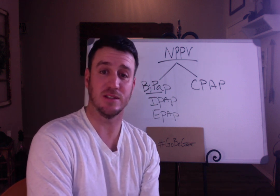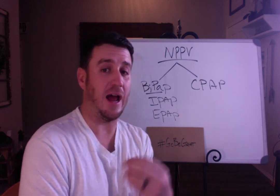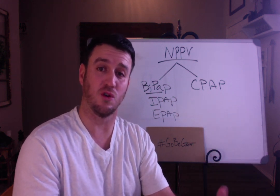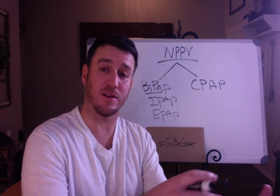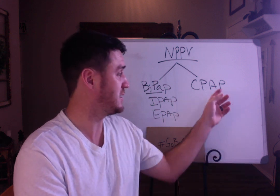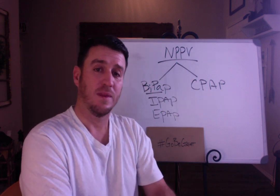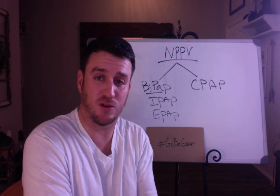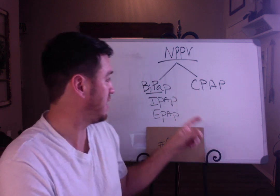This is important to understand because if you have a patient that has an acidotic blood gas, you need to not be thinking CPAP. If you have a patient whose blood gas shows a normal acid-base balance but mild to moderate oxygenation issues, then you should probably consider some form of CPAP to help improve their oxygenation status. For NPPV with a patient who needs ventilatory support to help remove CO2, you're going to be talking about BiPAP.